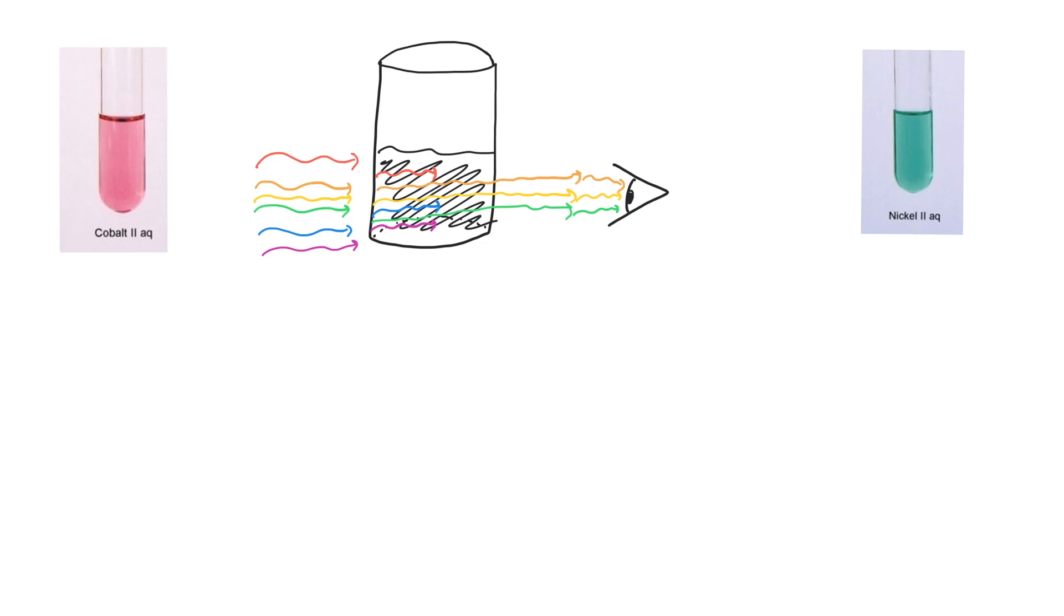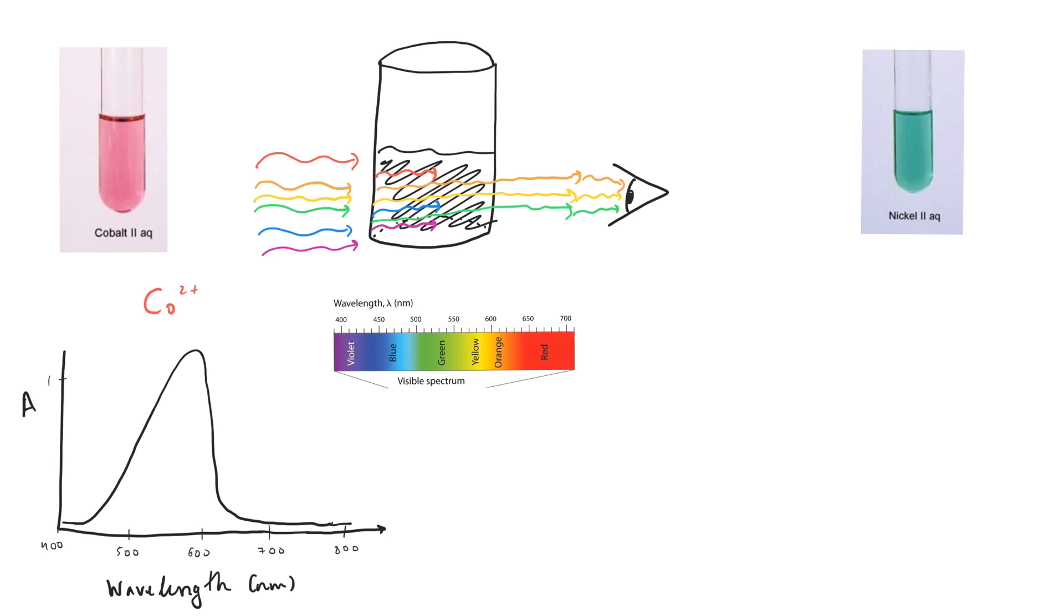Let's take a look at cobalt now. We can see from the absorption spectrum that cobalt absorbs light between 500 and 600 nanometers. Looking at the colored scale, these wavelengths correspond to green and yellow light. So the transmitted wavelengths that leave the solution are in the 400 and 700 nanometer region. These wavelengths correspond to violet and red light, which together result in the pink color that we see.